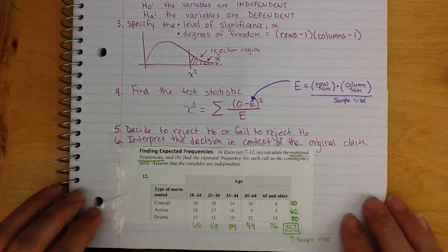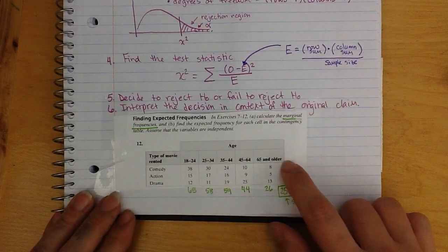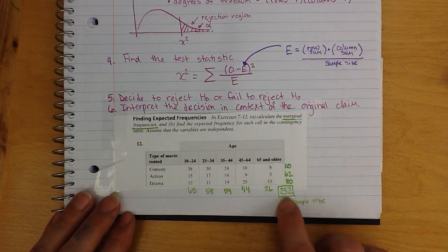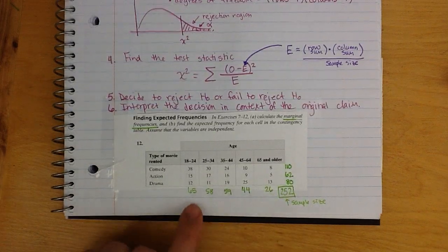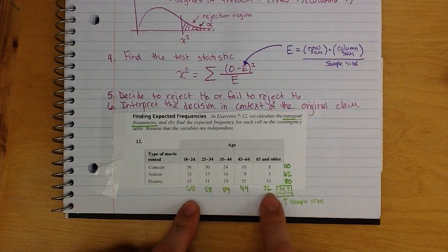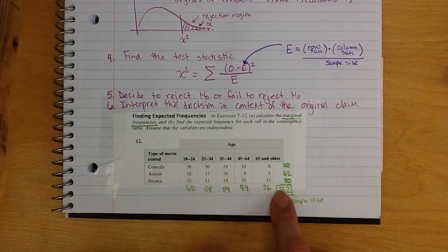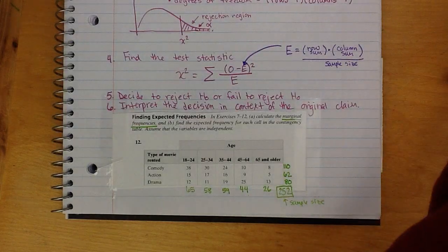Apparently I ran out of storage when I was filming. I had added these three numbers to get the sample size of 252, and then I always double check it by adding these numbers along here — 65, 58, 59, 44, and 26 — to make sure that I also get 252.